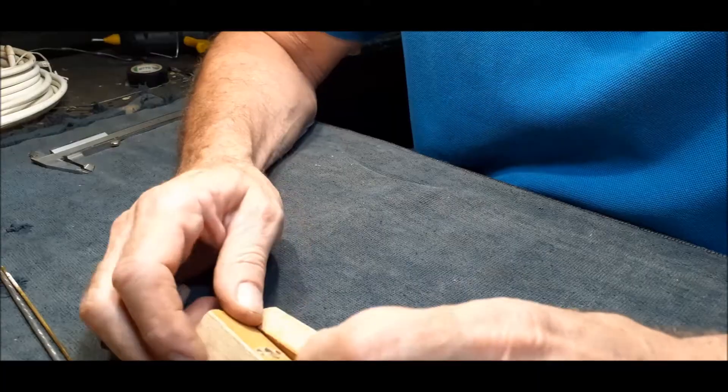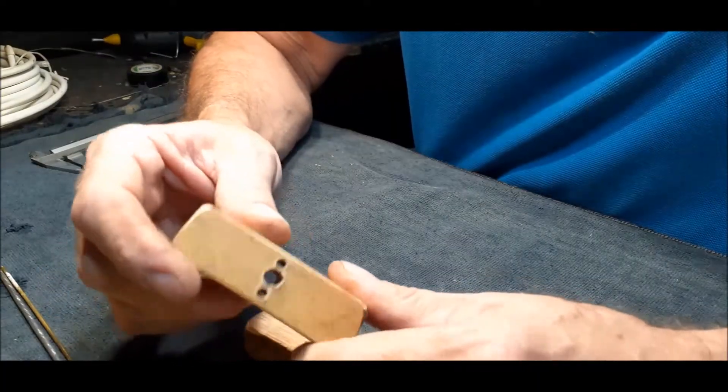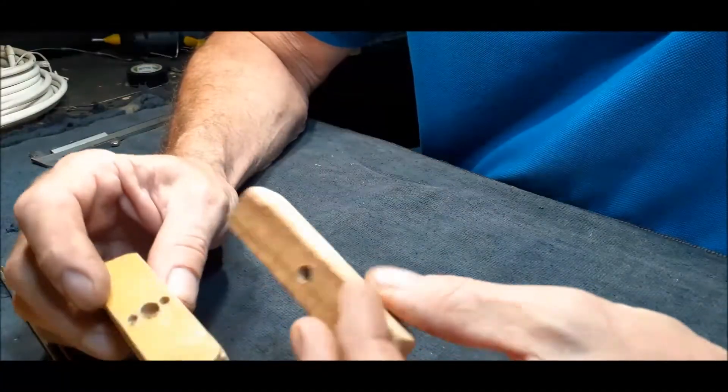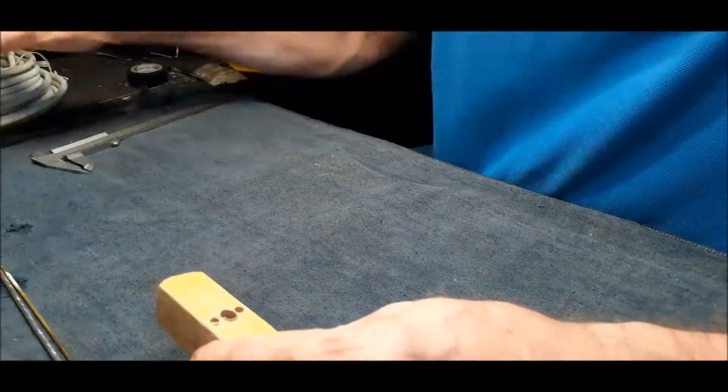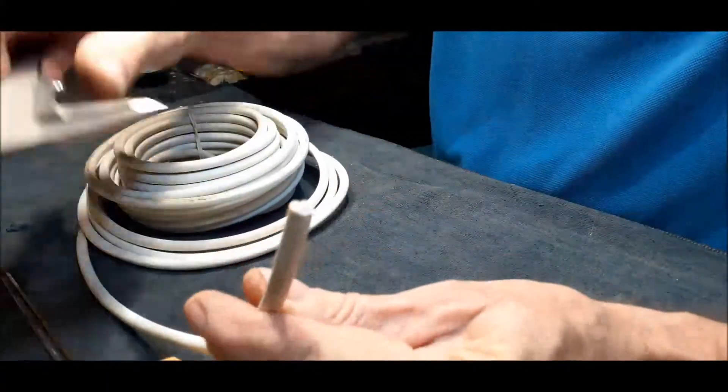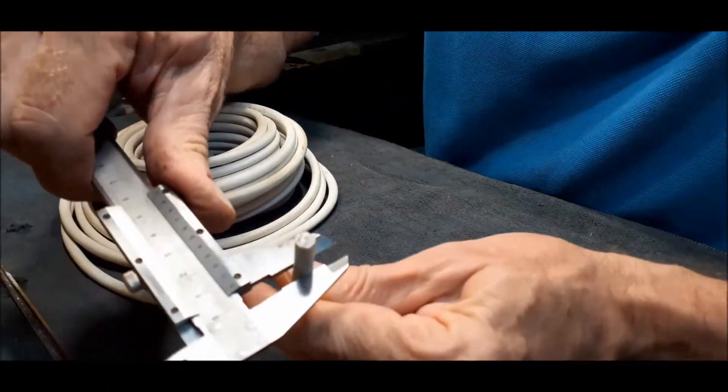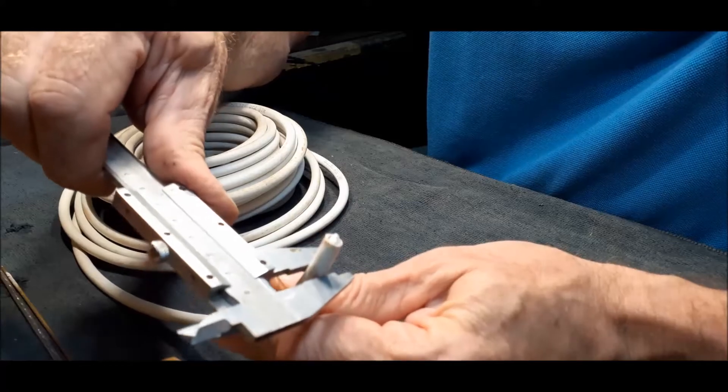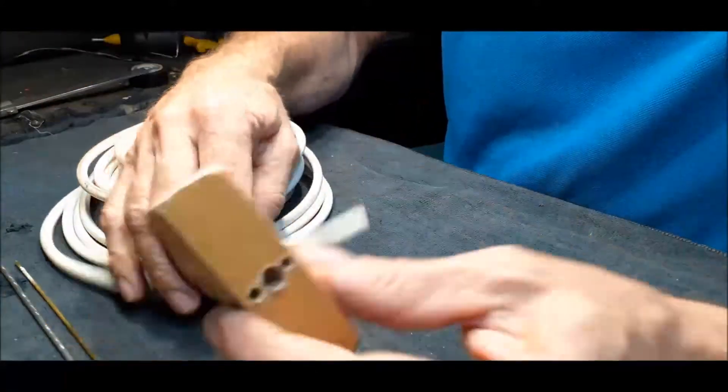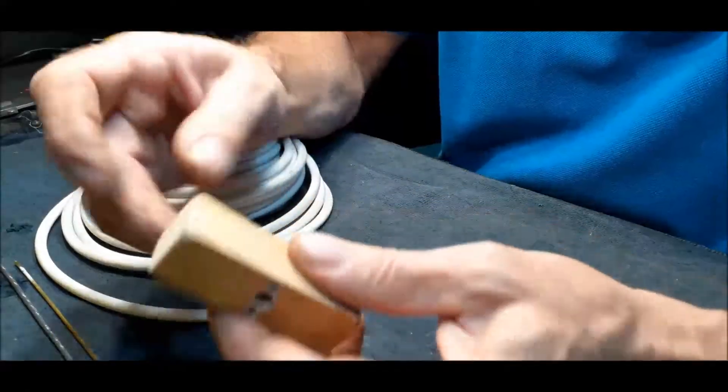First you go and you cut yourself a piece of wood, a little block like this, or whatever you have. Then you measure the size of your coax cable, this one is like 7 millimeters diameter, then you drill a hole in there.